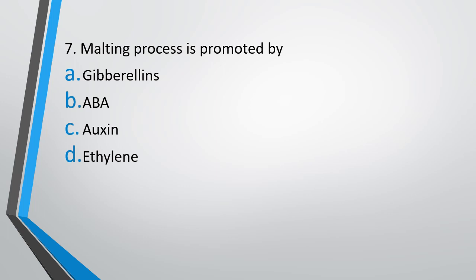Question 7: The malting process is promoted by — Option A: gibberellin, Option B: ABA, Option C: auxin, or Option D: ethylene. The correct answer is Option A, gibberellins promote the malting process.